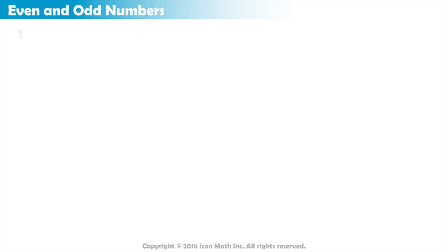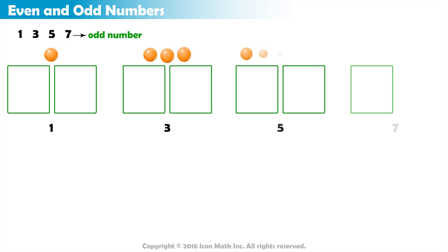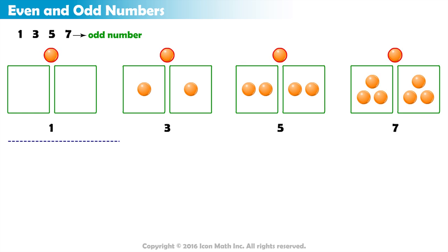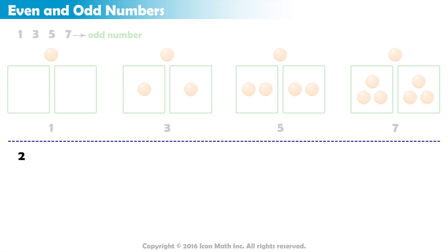The numbers 1, 3, 5, and 7 are odd numbers. And the numbers 2, 4, 6, and 8 are even numbers.